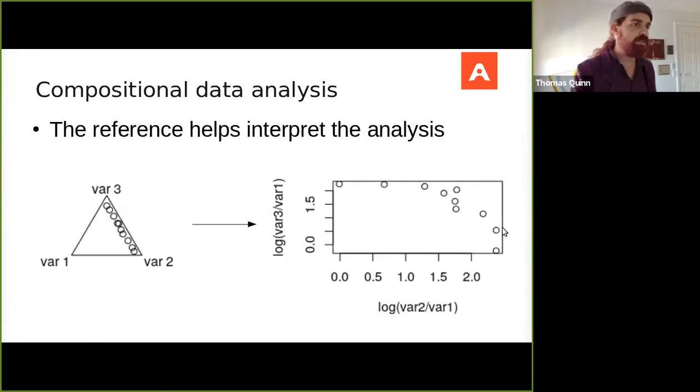And on the right plot, that's what we see. The x-axis here represents one log ratio with the second variable divided by the first, and the y-axis represents another log ratio with the third variable divided by the first. So in this case, we have a single data set represented by a single simplex, and we're choosing a single reference to perform a single transformation to project the one data set into a new space.